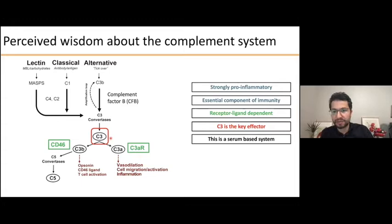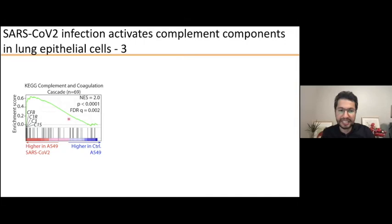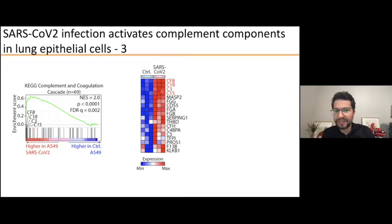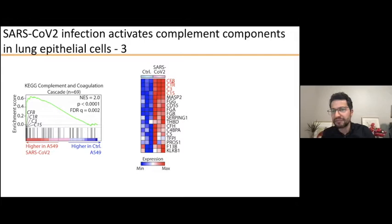Complement-related pathways are among the highly induced pathways in response to COVID-19. Genes more highly expressed in A549 cells infected with SARS-CoV-2 compared to control are enriched in complement-related pathways, with top genes including C3A and CFB — complement factor B. When we look at the expression of these factors across different cell lines and COVID patients, they are highly induced.